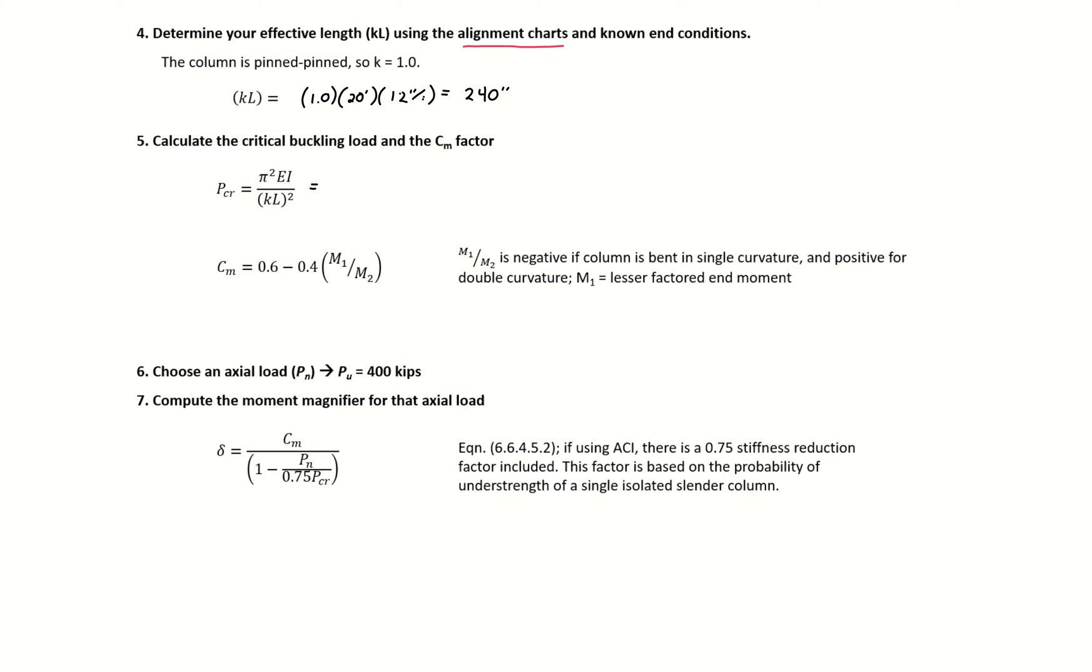We can then plug all this in and calculate our P_critical. P_critical is pi squared times our EI, which we found on the previous slide, 7.8 times 10^6, divided by 240 squared, giving us P_critical of 1,340 kips.